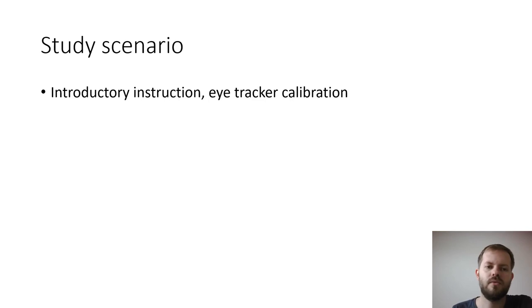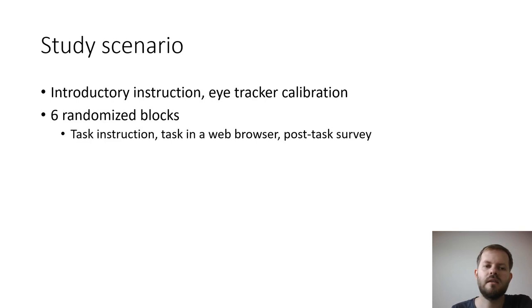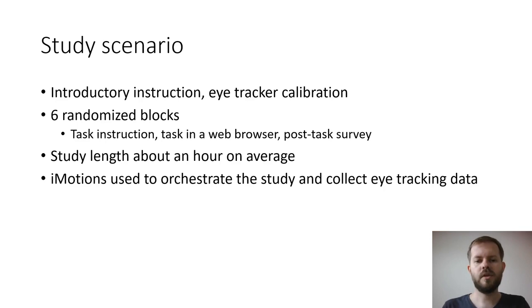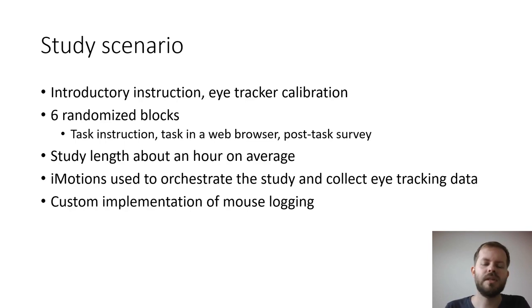The study scenario consisted of these steps: first, introductory instructions explaining the confusion button and the tasks. Then we calibrated the eye trackers, followed by six tasks in a randomized order. Each block consisted of a task instruction, the actual task in a web browser, and a short post-task survey asking users whether and why they clicked on the confusion button. The study took about an hour on average.